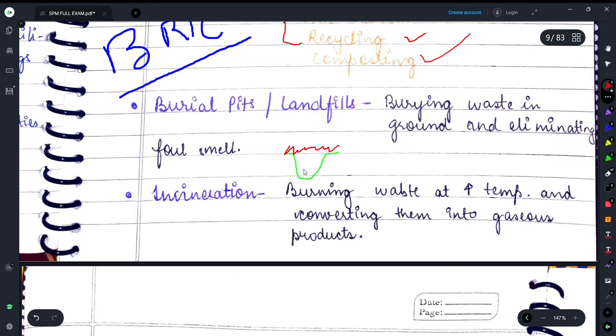If you put the waste under the ground and then cover it with soil, the malodorous smell from that waste will not come out. So this helps in eliminating the foul smell.